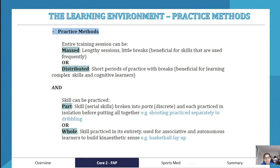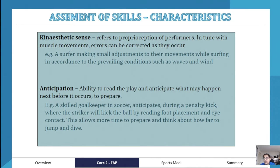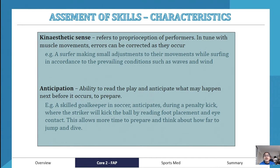For the assessment of skill, the first characteristic is kinesthetic sense. Kinesthetic sense refers to the proprioception of performance — being in tune with muscle movements. The athlete can feel when an error is occurring and make corrections as they happen. Kinesthetic sense typically begins to develop at the associative stage and is fully present in autonomous learners.